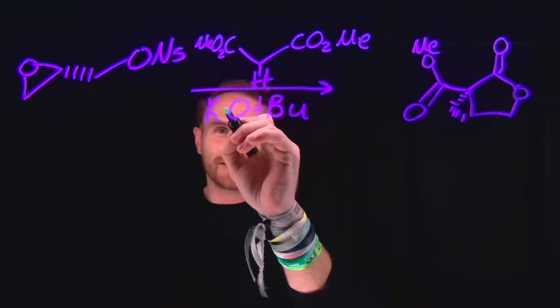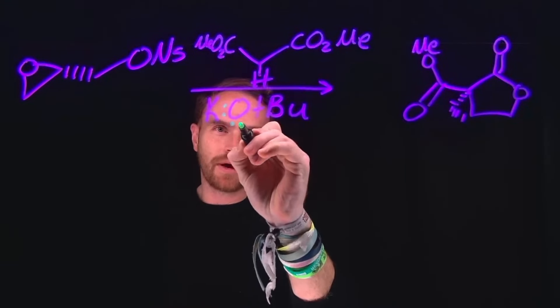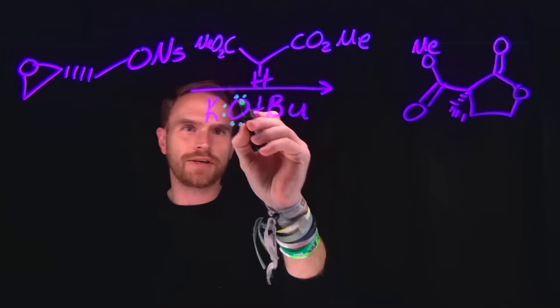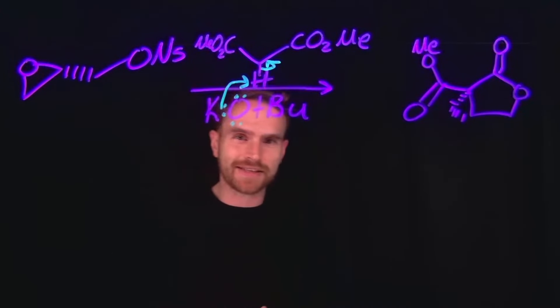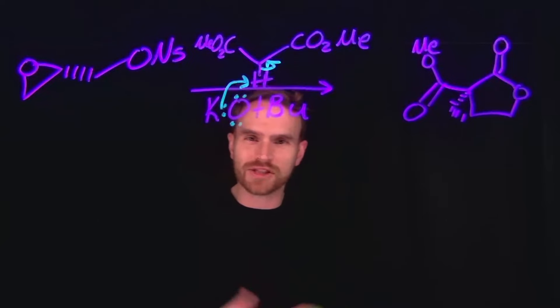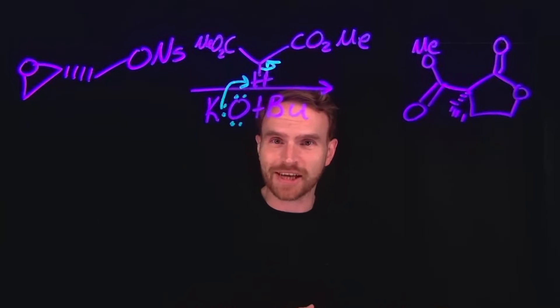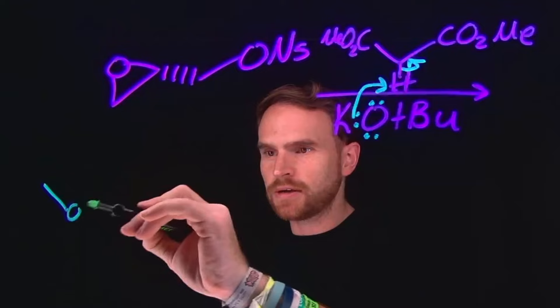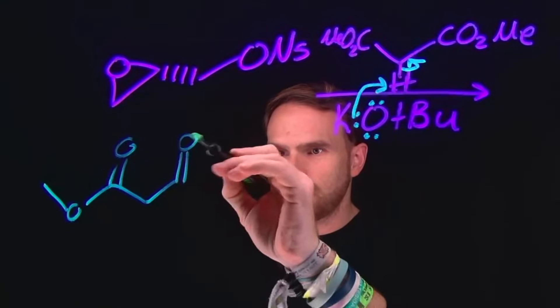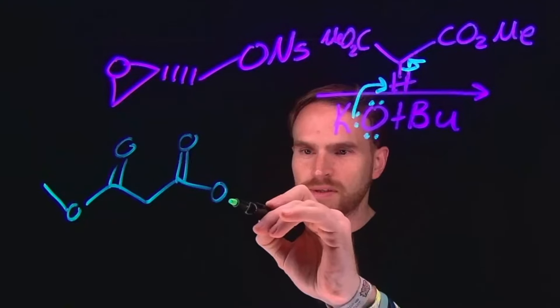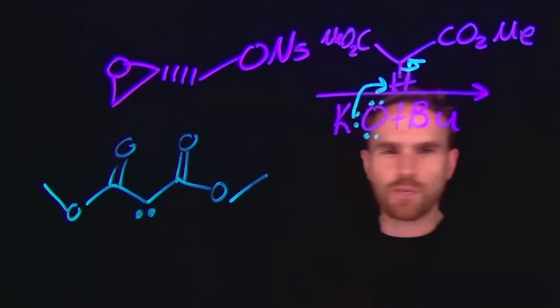The first step in this mechanism is the deprotonation of the alpha carbon position right here to form what is known as an enolate. This is a very common example of a starting material that readily forms enolates. That enolate ends up looking just like this, where now we have a stabilized nucleophilic carbon position at this position, which is stabilized through resonance through both of these ester functional groups.